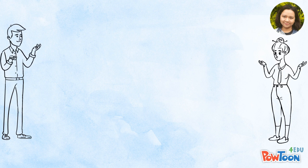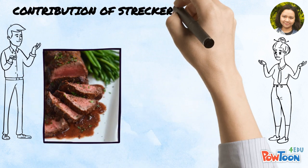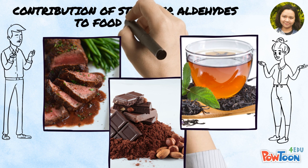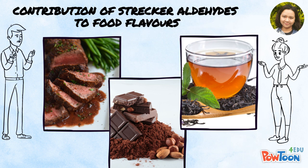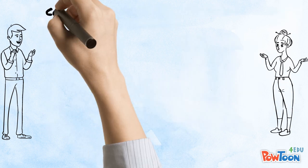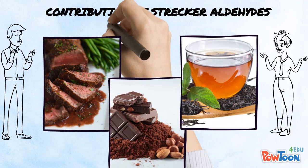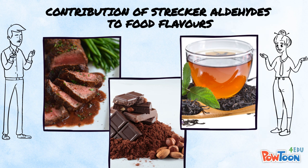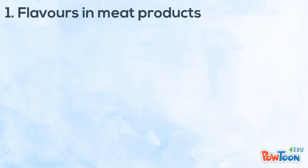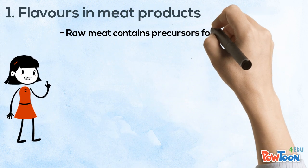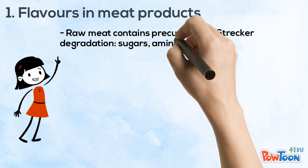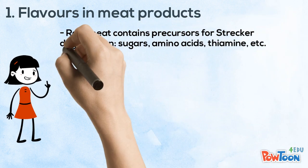Strecker degradation plays an important role in the flavor formation of various processed foods. This reaction converts amino acids into the related aldehyde, which contributes significantly to the aroma of final products. Some processed foods involving Strecker degradation include meat, milk, cheese, cocoa, black tea, and beer. Raw meat contains precursors for the formation of aromatic molecules such as sugars, amino acids, ascorbic acids, and thiamine.